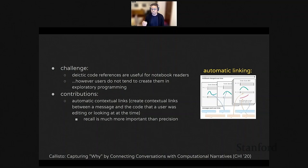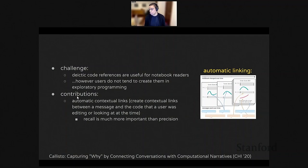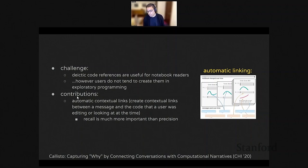April came up with a technique for automatically creating these deictic references by automatically creating contextual links between a message and the part of the code a user was editing or looking at when they sent that message. The key insight was that recall was a lot more important than precision: it's okay to have erroneous references because people can tell when an inferred link doesn't make sense, but if a message refers to a part of the code and it's impossible to understand that message after the fact, it's really important that you can capture which part of code the message refers to.